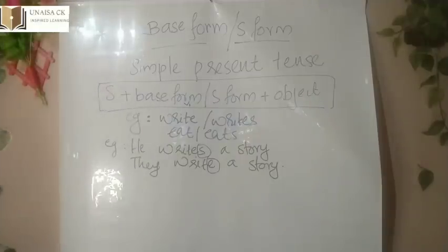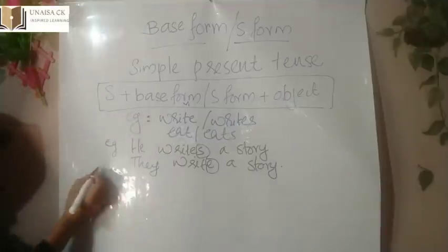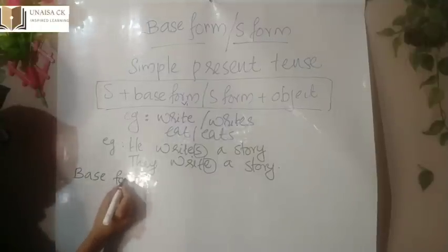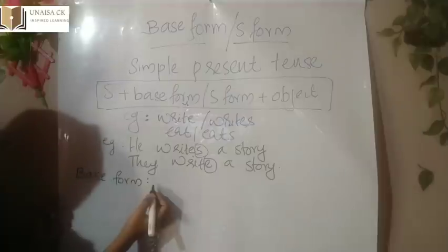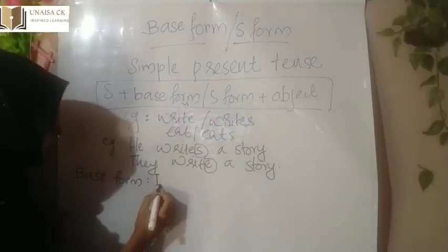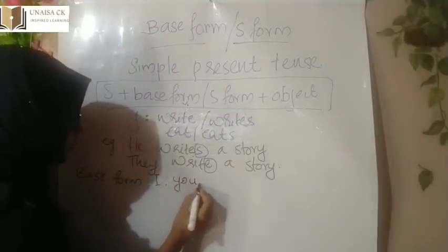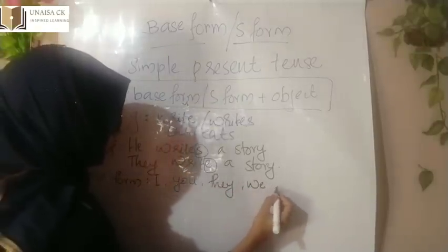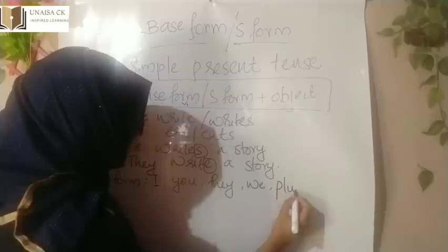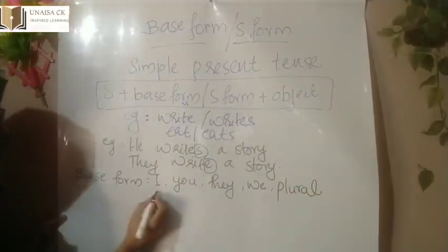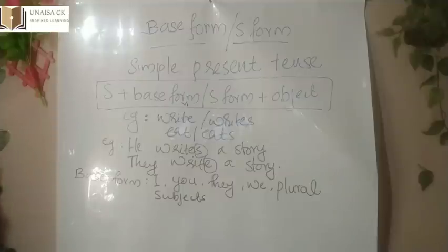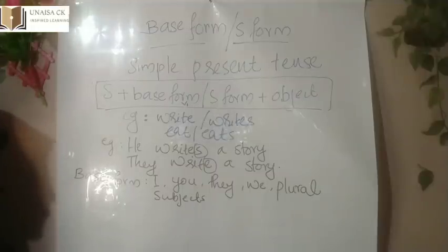So first let's look at base form. Base form means we need not add S — we just write the verb as it is. I will pair base form with: I, you, they, we, and plural subjects.